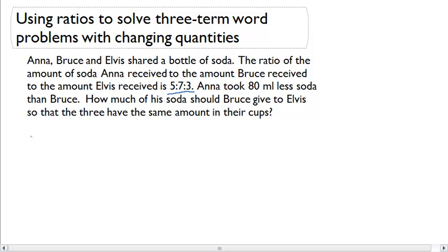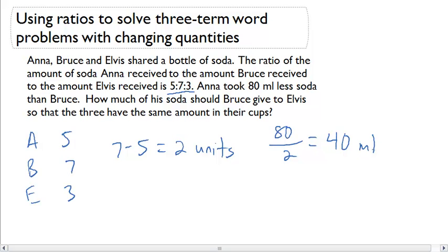Well let's start off with this ratio. I know that Anna to Bruce to Elvis was in a 5 to 7 to 3 ratio. I also know that Anna took 80 milliliters less soda than Bruce. If I calculate the difference between their units, 7 minus 5 gives me 2 units. And I know that it was 80 milliliters less soda between those two units. That's going to give me 80 milliliters per unit.